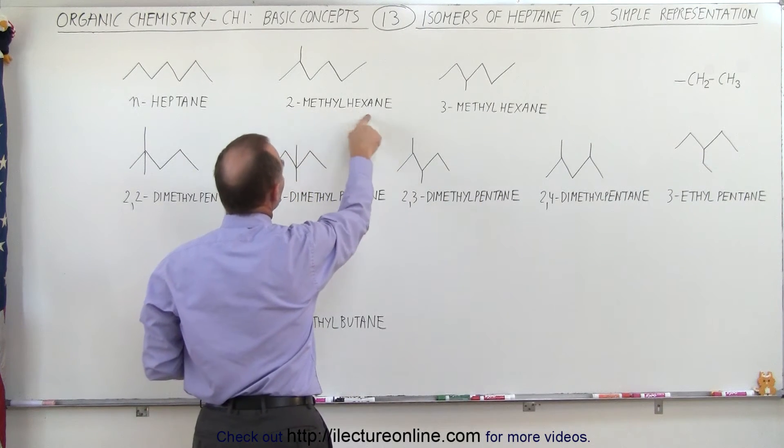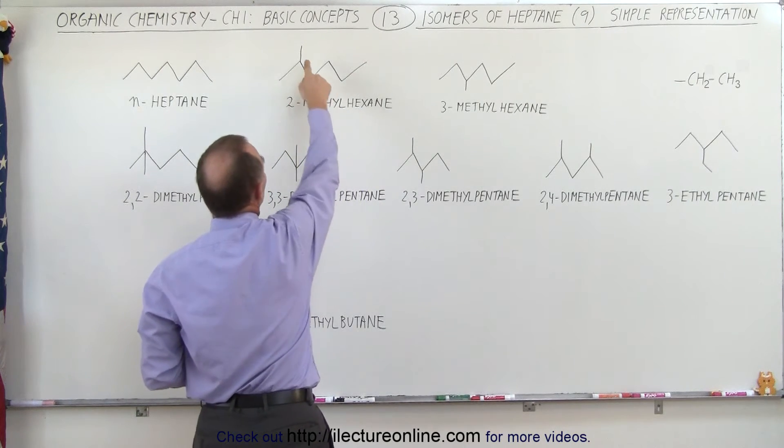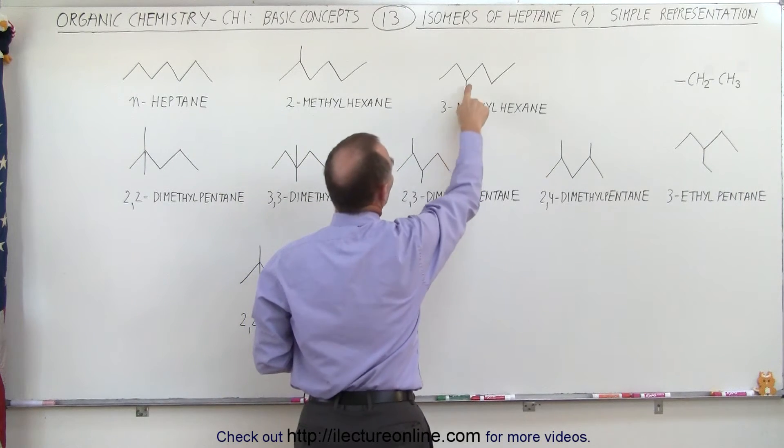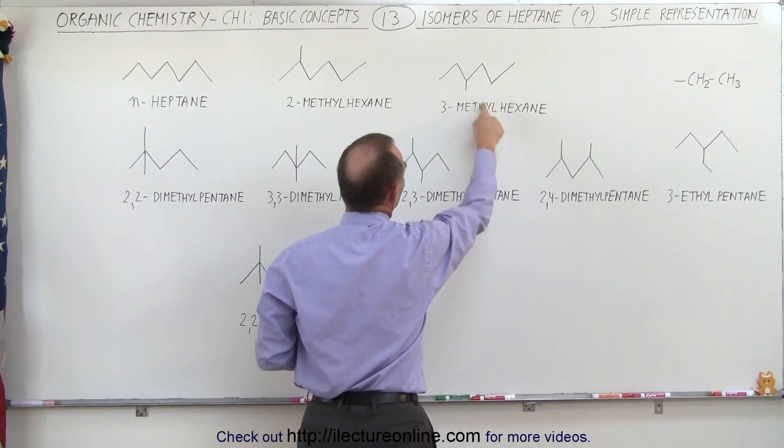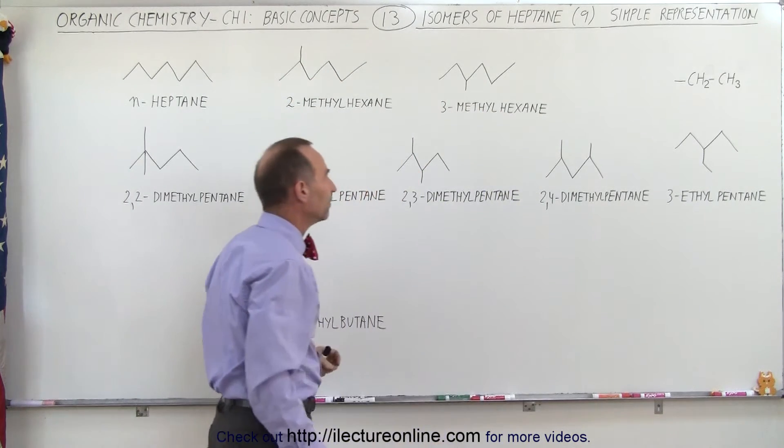Two methylhexane, two because it's connected to the second carbon, methyl because it's the methyl group. Here, three because it's connected to the third carbon, methyl because it's a methyl group, hexane because now you only have six carbons left in the chain.